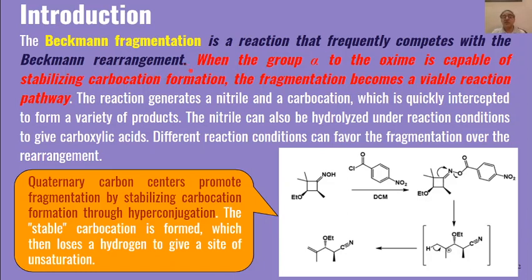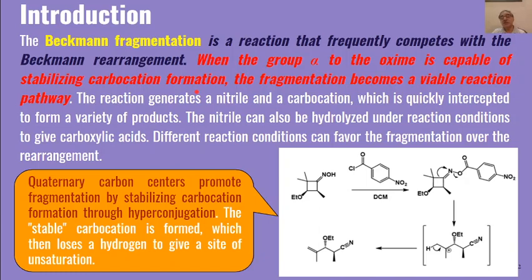Beckmann fragmentation frequently competes with Beckmann rearrangement. The substrate here needs to be slightly different than the normal substrate under Beckmann rearrangement. When the group alpha to the oxime is capable of stabilizing carbocation formation, then fragmentation will become a viable reaction instead of Beckmann rearrangement. If a group alpha to the oxime can form a stable carbocation, the reaction will undergo fragmentation instead of rearrangement.